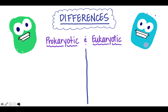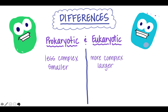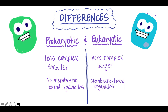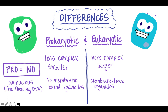Let's look at the differences between prokaryotic and eukaryotic cells — these are important to remember. Prokaryotic cells are less complex and smaller in size. Eukaryotic cells are more complex and larger in size. Prokaryotic cells have no membrane-bound organelles, while eukaryotic cells do have membrane-bound organelles. The biggest thing to remember is that 'pro' means no: prokaryotic cells have no nucleus, meaning the genetic material in the DNA is just free-floating in the cell.